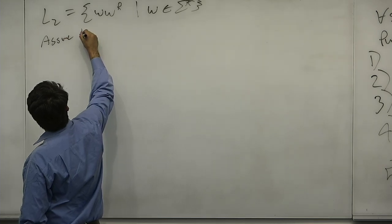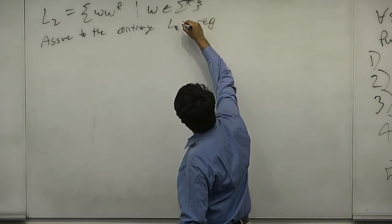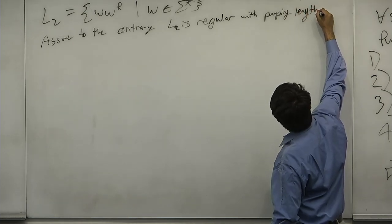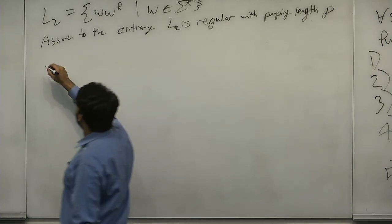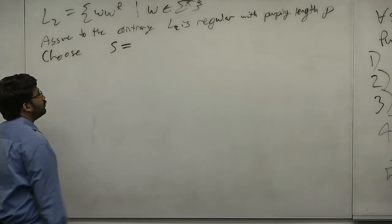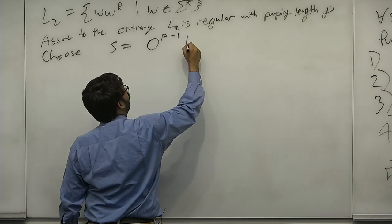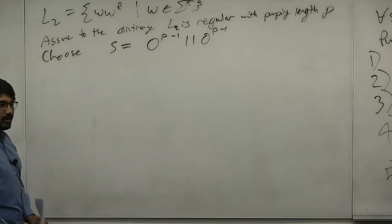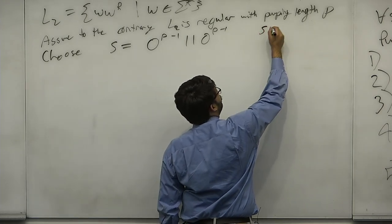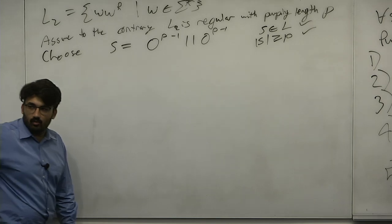Assume to the contrary L2 is regular with pumping length P. Let's choose a bad S on purpose to see what happens: S = 0^(P−1) 1 1 0^(P−1). We have P−1 zeros, followed by 11, followed by P−1 zeros. This is obviously an even-length palindrome, so S is in L — check. The length of S is 2P, which is greater than or equal to P — check.